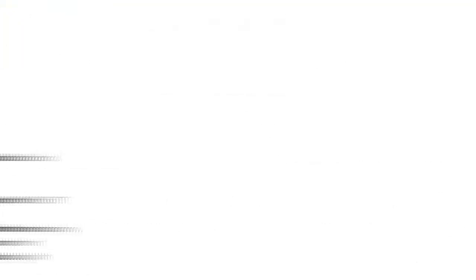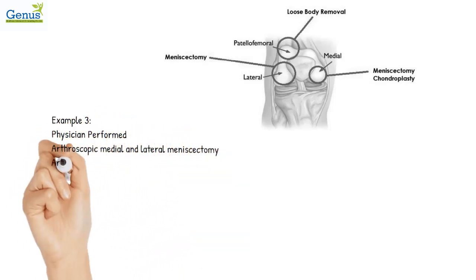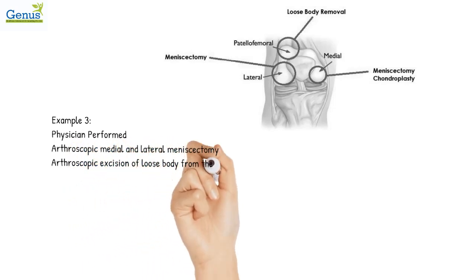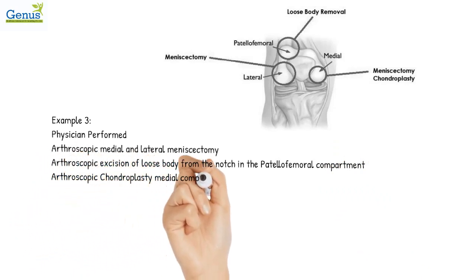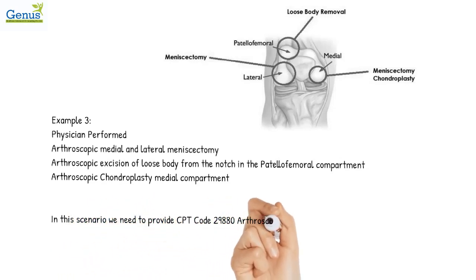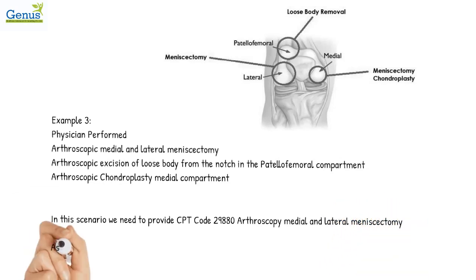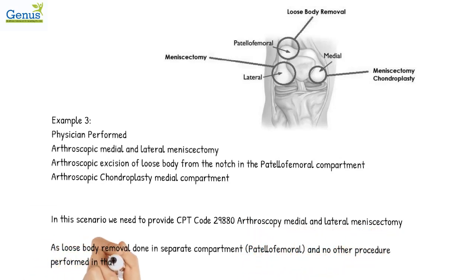Example 3: A physician performed arthroscopic medial and lateral meniscectomy, arthroscopic excision of a loose body from the notch in the patellofemoral compartment, and arthroscopic chondroplasty in the medial compartment. We code CPT code 29880 for arthroscopy with medial and lateral meniscectomy. Since the loose body removal was done in a separate compartment (patellofemoral) with no other procedure performed there, it will be coded with HCPCS code G0289. Chondroplasty in the medial compartment is bundled with meniscectomy, so CPT code 29877 will not be coded separately.